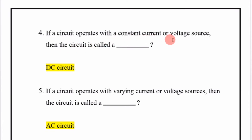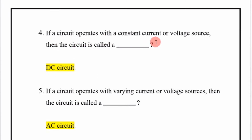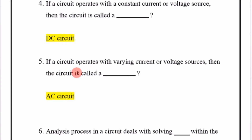If a circuit operates with a constant current or voltage source, then the circuit is called a DC circuit.